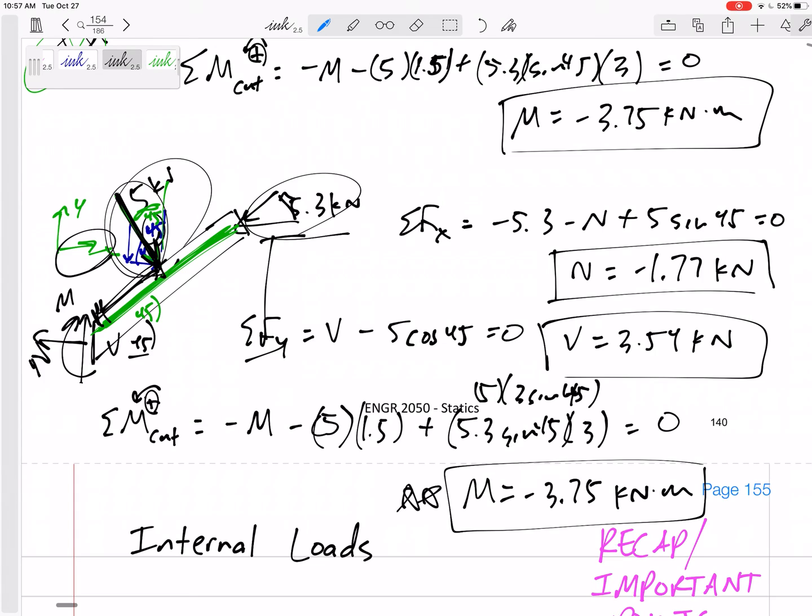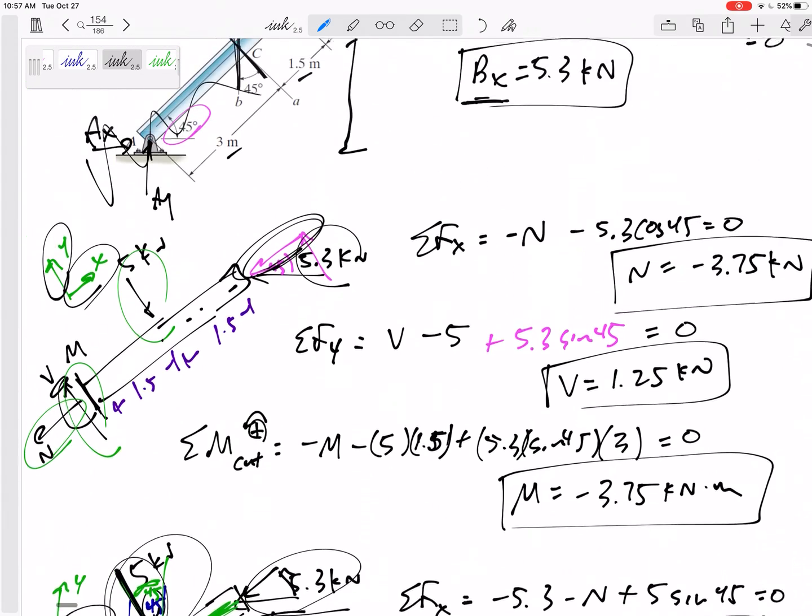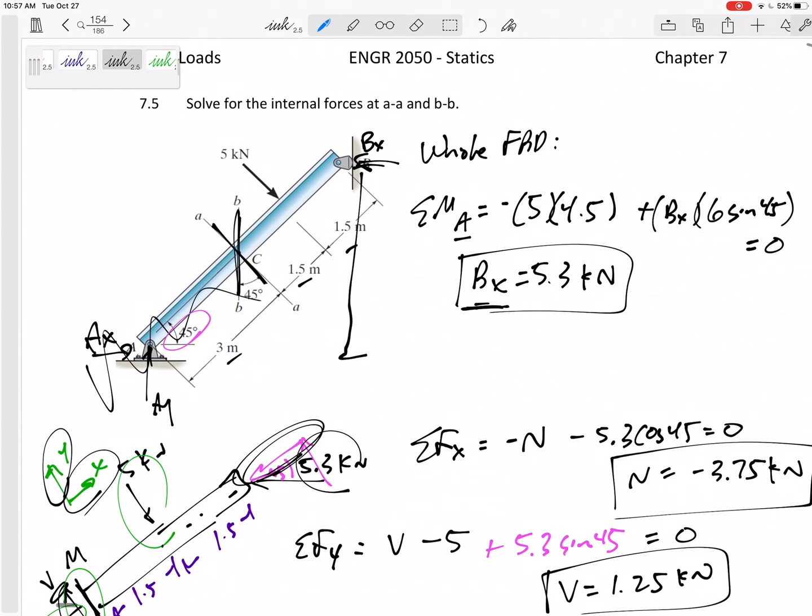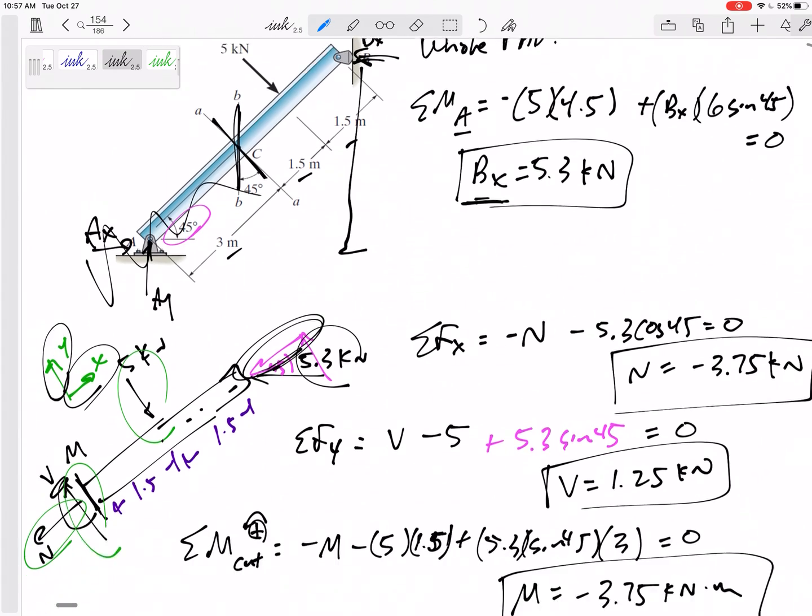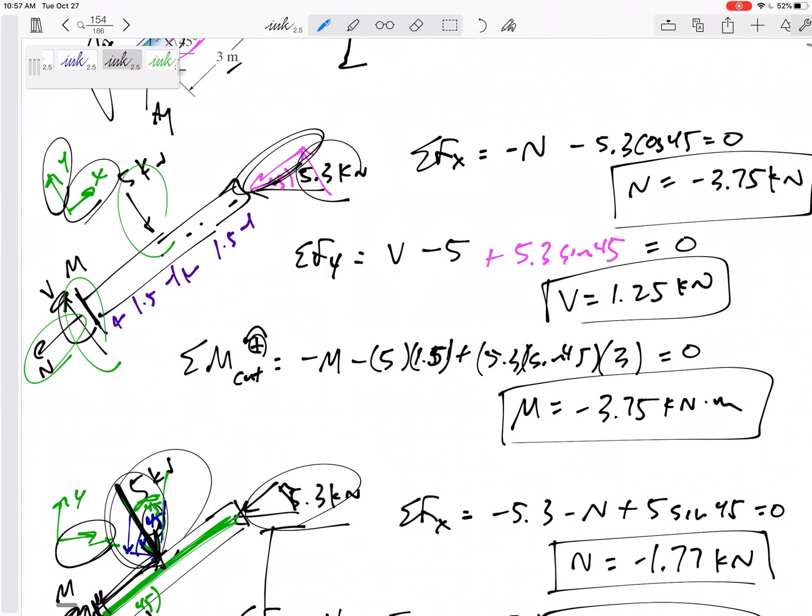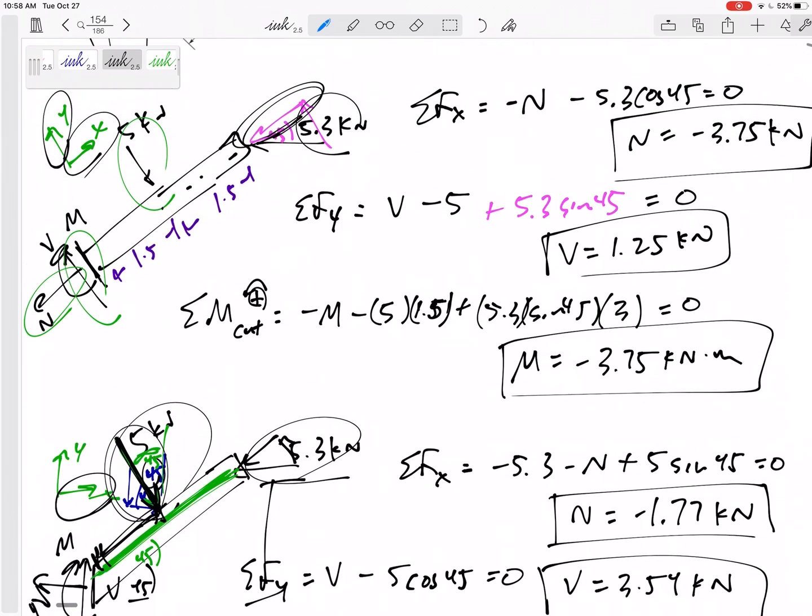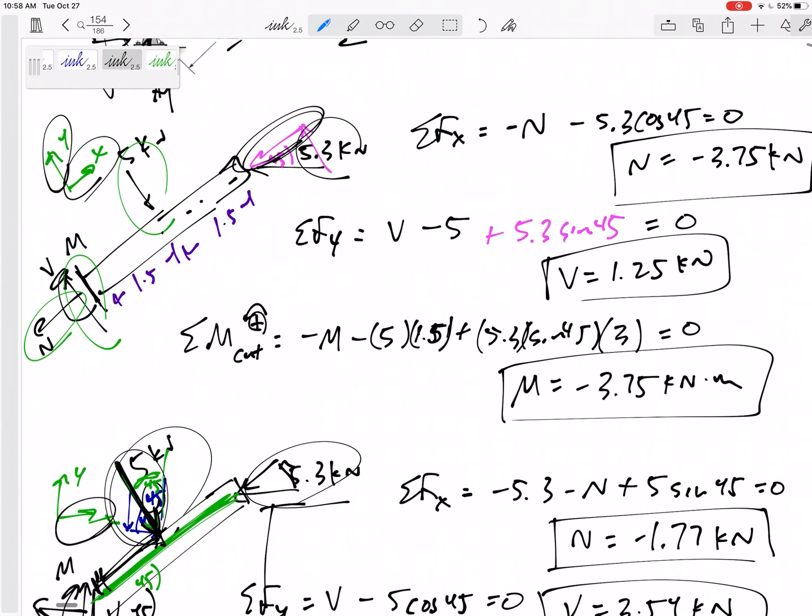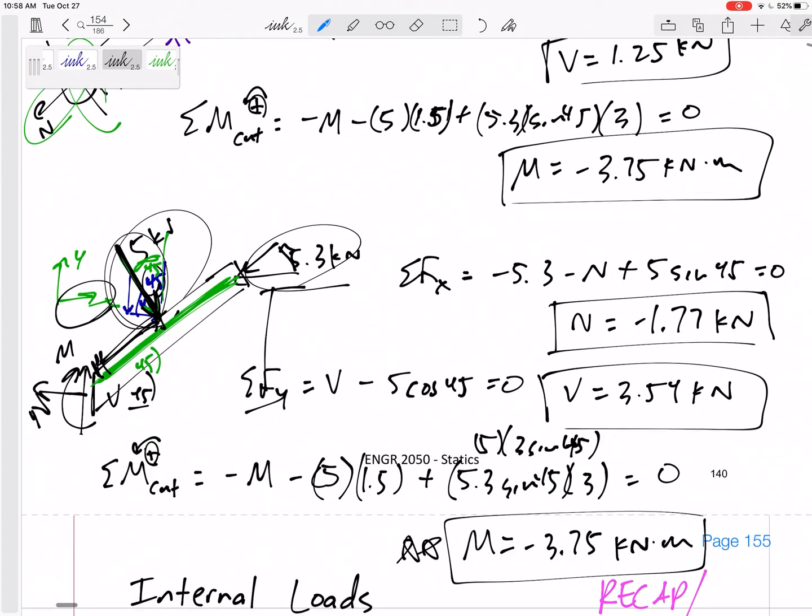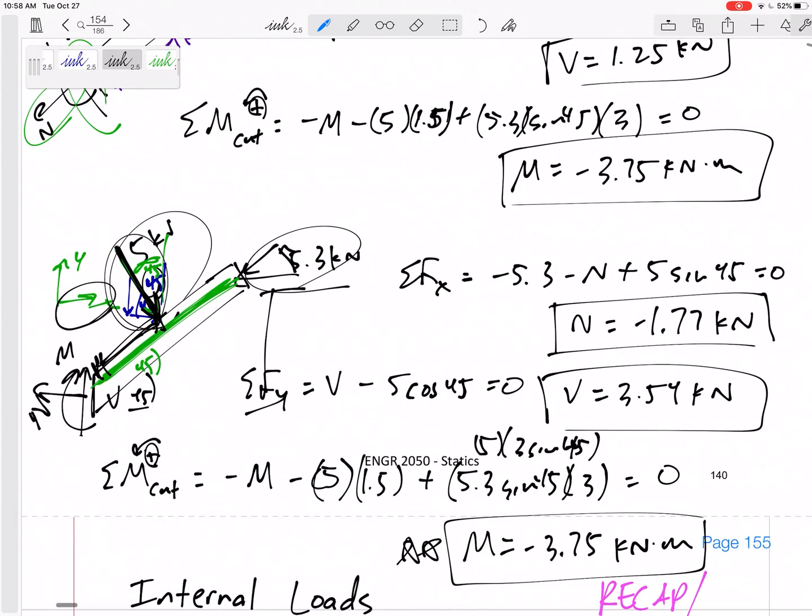All right so I think that's enough problems for you to know the process. What's the process? Look at the whole free body diagram if you need to or maybe look at one equation for the whole free body diagram. Cut it, draw N V and M the positive sign convention and then you've got your three equations for that part that you cut. You've thrown away the other half, you've replaced the other half with the N V and M. Solve for it. If your answer comes out negative leave it negative.